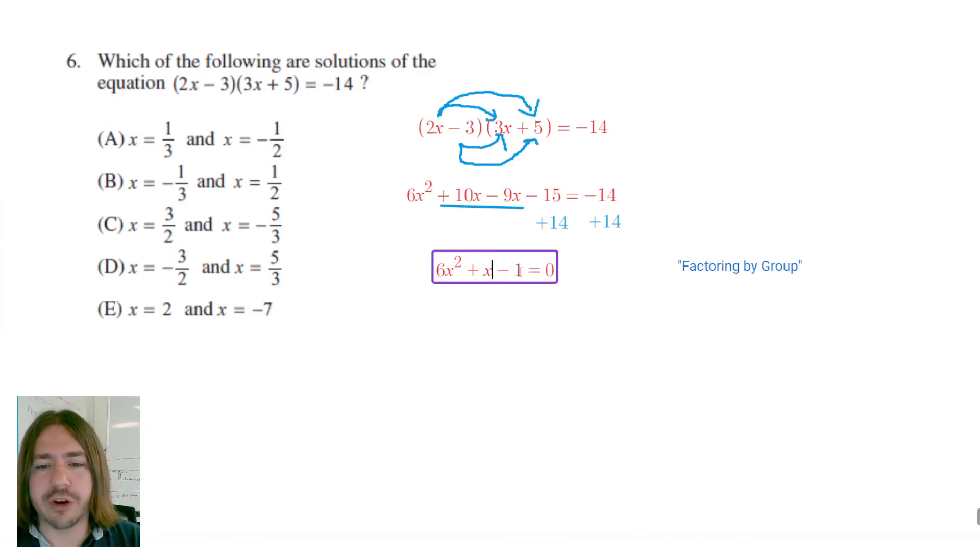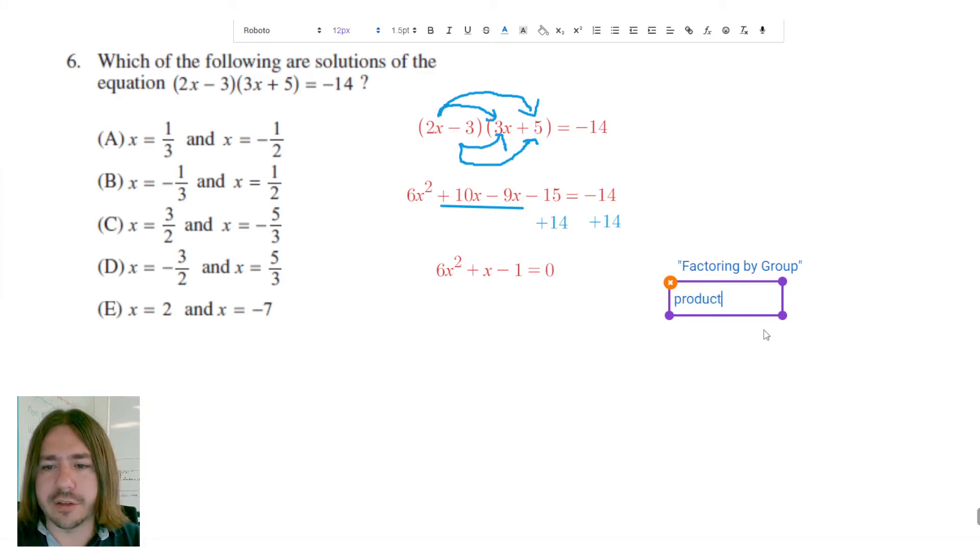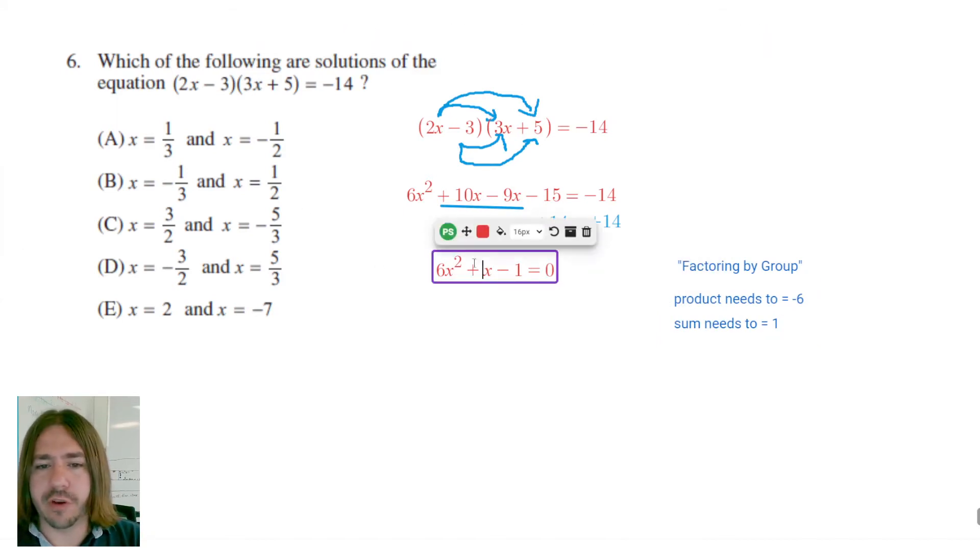So the way this works is we're going to try to find two numbers that multiply to give me negative 6, which is the product of 6 and negative 1. So the product needs to be, or I'll say, needs to equal negative 6, and then the sum needs to equal positive 1, which is the coefficient of the linear term. Whenever there's not a number in front of a variable, we assume that coefficient to be 1. So we try to think of two numbers that sort of match this, and that would be negative 2 and 3.